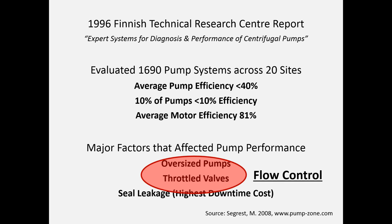That also has a flow-on effect into our maintenance and reliability. For example, seal leakage was found to be the highest downtime cost. That has to do with the additional forces created within the pump due to the fluid mechanics when we have a highly throttled pump. So we have an oversized pump which then has to be throttled in order to achieve the required flow rate, which then has these other flow-on implications into our system.